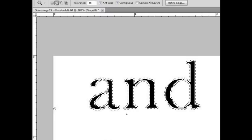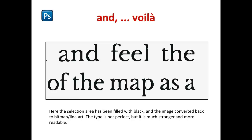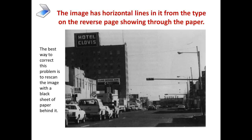This is what it looks like when you zoom in — the dotted line shows the area that's been selected. Fill that with black, and that makes for stronger type — it fills in all those holes and missing parts, and you get type that looks much more readable. Here's another problem: the image has horizontal lines through it from the type on the reverse page showing through the paper. I worked many hours trying to figure out a solution, and then I had the idea that if everything behind it was all black, you wouldn't have that contrast. The solution: re-scan the image with a black sheet of paper behind it, and you get out of that problem.